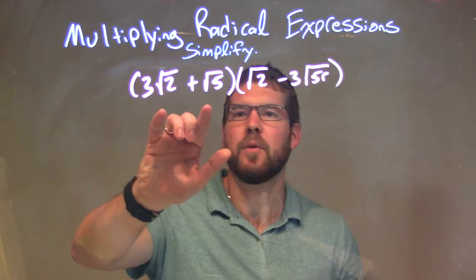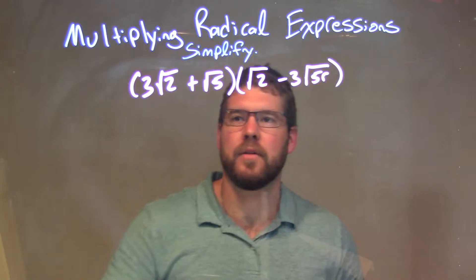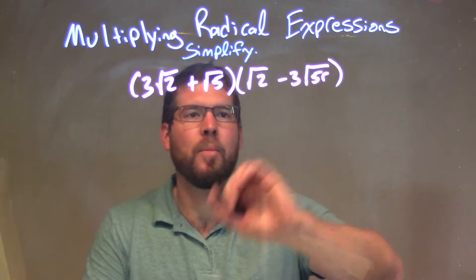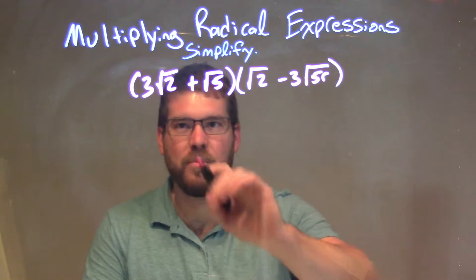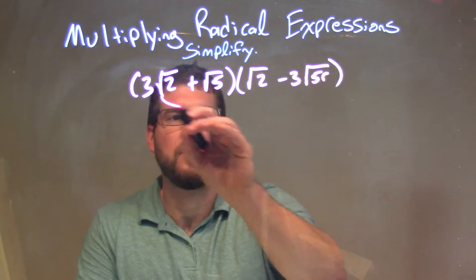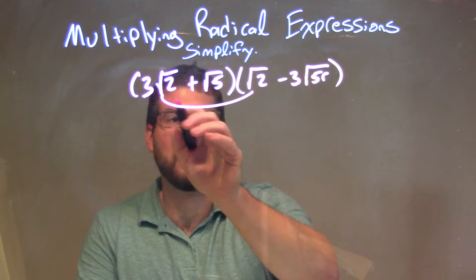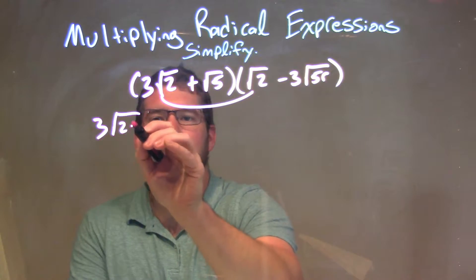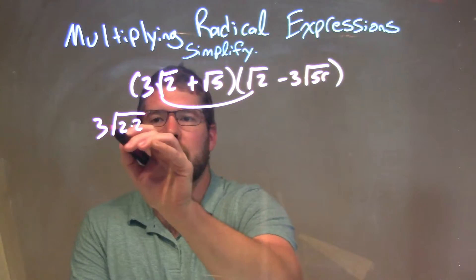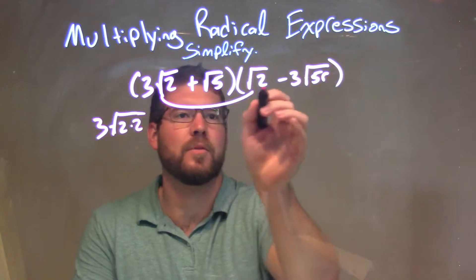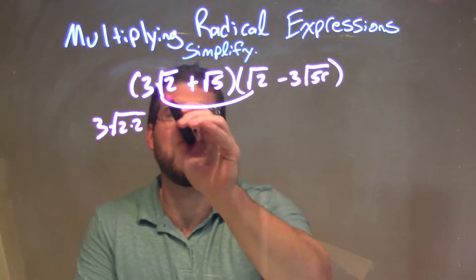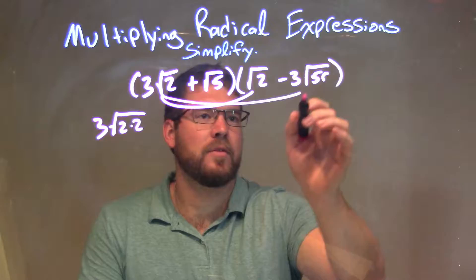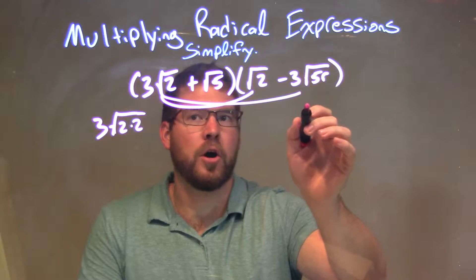Since I cannot simplify within each parenthesis, I'm going to take all parts of my first parenthesis and multiply it by all parts of my second parenthesis. So 3 times the square root of 2 — square root of 2 times square root of 2 is just 3 square root of 2 times 2. I'm going to put that square root of 2 and square root of 2 into one big parenthesis. Next part: 3 square root of 2 times minus 3 square root of 5r.